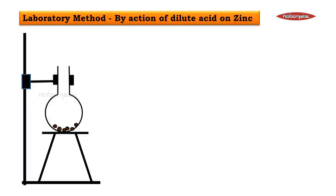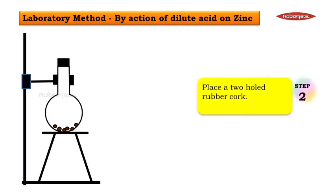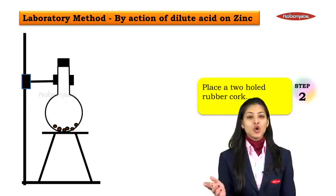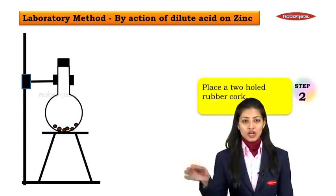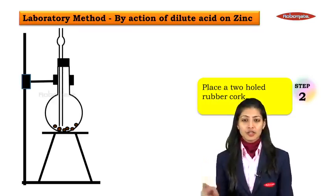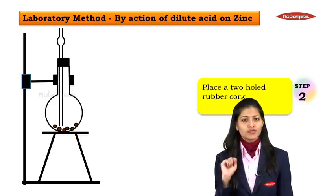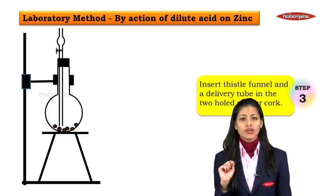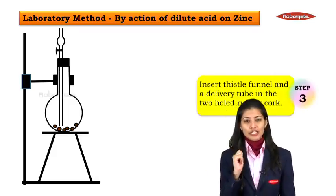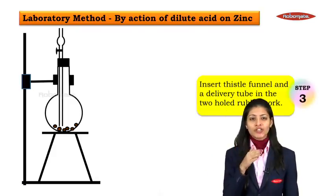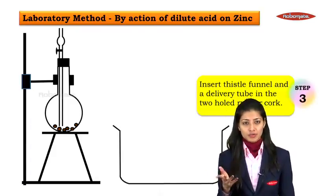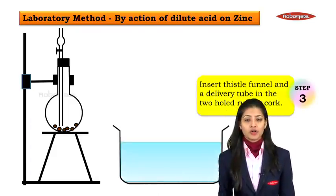In the second step, we place a two-hole rubber cork and attach it to the round bottom flask. Through one hole we attach a thistle funnel, and through the second hole we attach a delivery tube through a rubber cork.